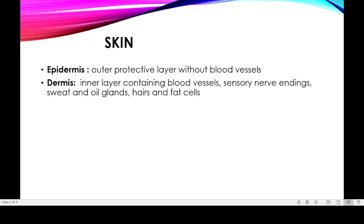Now let's see how skin works in homeostasis. The skin has two major parts. The outer layer is known as the epidermis, which is without blood vessels. The inner layer is known as the dermis, which contains blood vessels.